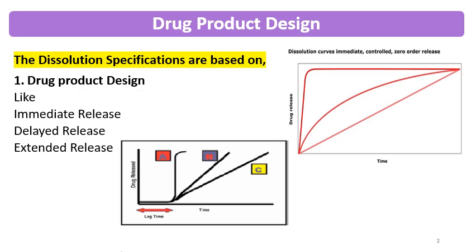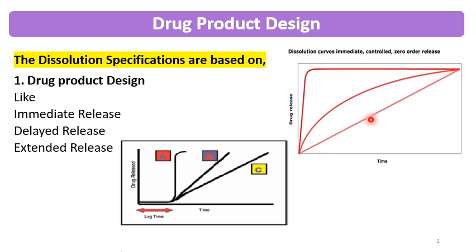When you see the IR type of formulation, you will see the rapid release or rapid dissolution of the drug. Immediate release is where the drug is released within 15 minutes or 30 minutes. Then you can see controlled release, where the release is very slow. And then comes zero order release, where the concentration or drug release is independent of the concentration inside the formulation. That is why it is called zero order release.